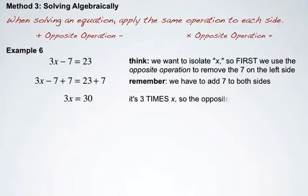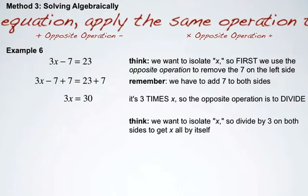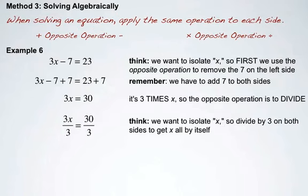Now this 3 is attached to our x by multiplication, so the opposite is to divide. So we divide both sides by 3 and get x equal to 10.